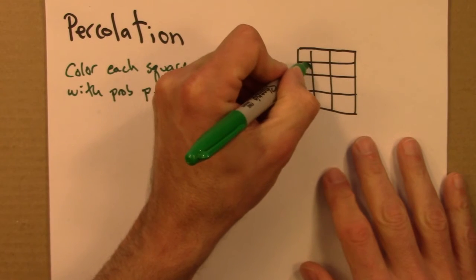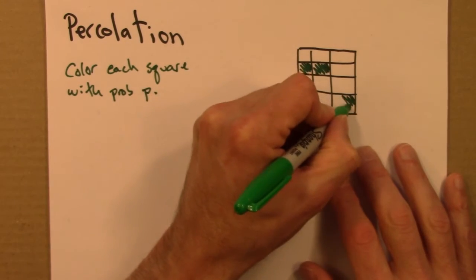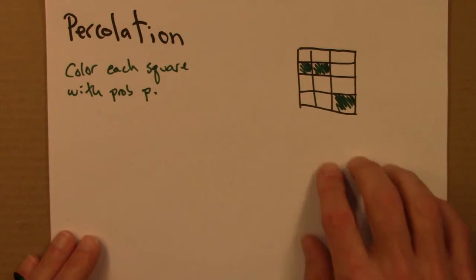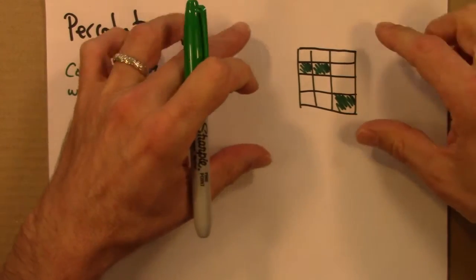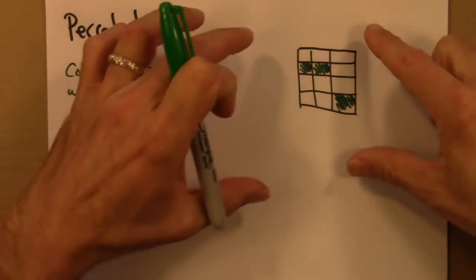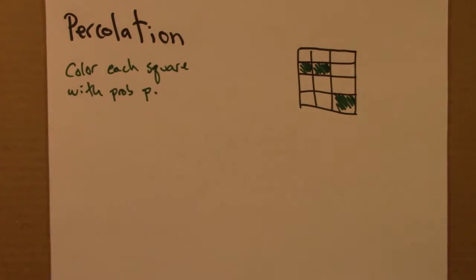And if I did that, who knows, maybe I would get something that looks like this. Of course, it would be different every time. It's a random process. And we'll be interested in much larger lattices. And even then, interested in the properties of this system as the lattice size goes to infinity.